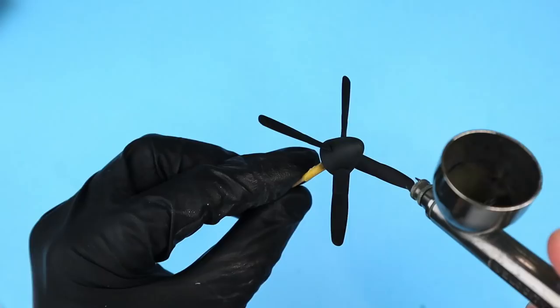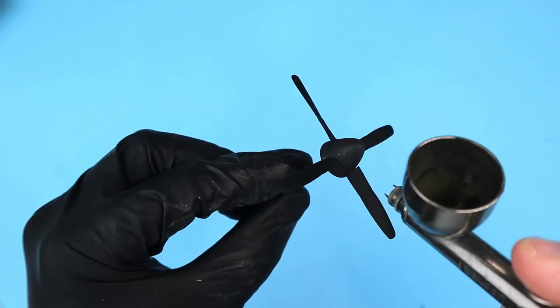I sprayed the prop and spinner flat black and then came back with some nato black and sprayed the tip of the spinner.